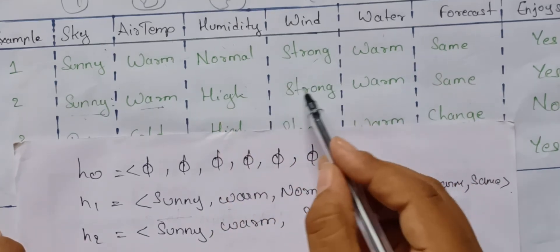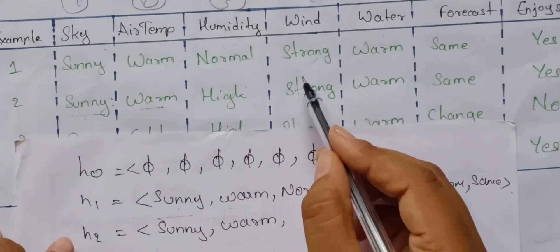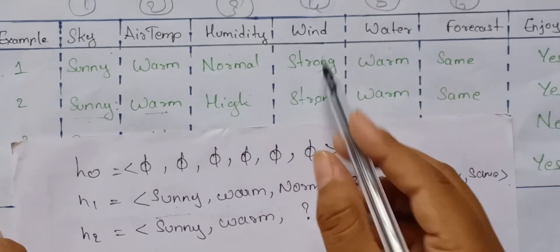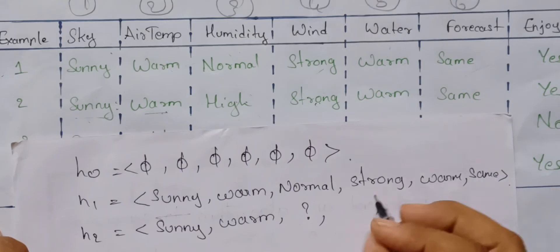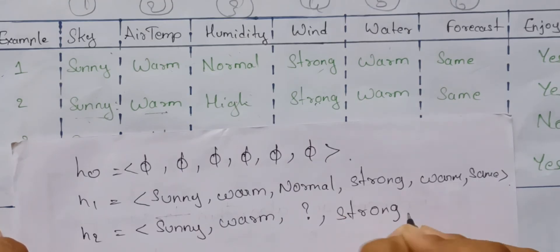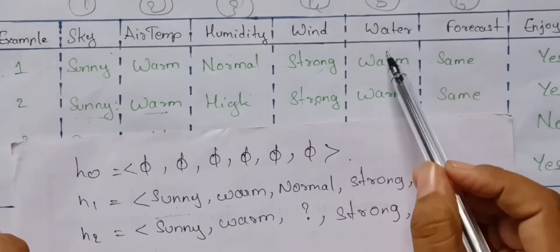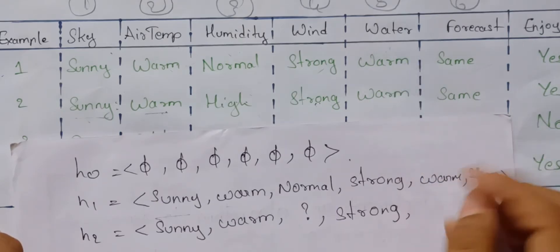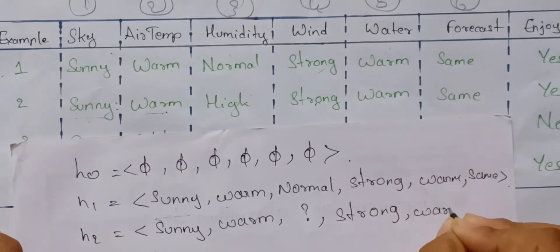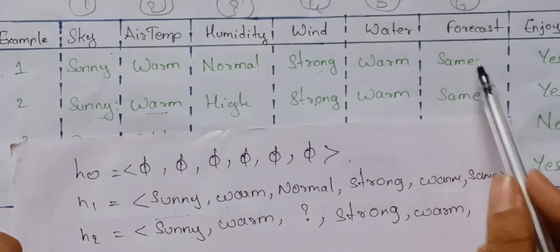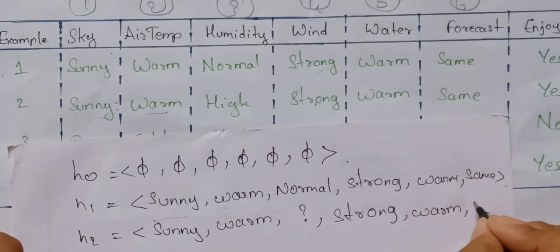Next, strong — H2 is strong. They are the same values, no change, right as it is. Next, warm and warm — same values, no change, right as it is. Same value again — no change, right as it is.